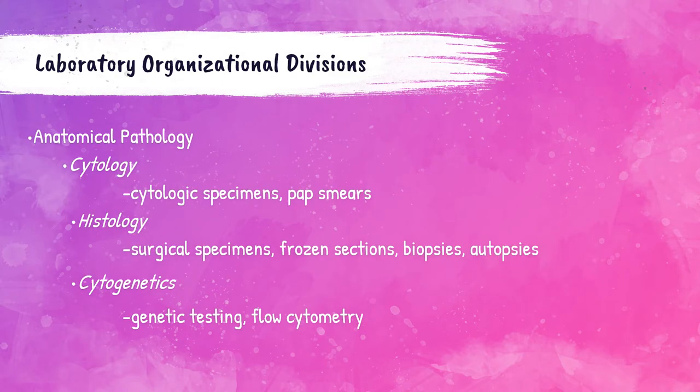There are two main sections of the laboratory. The first section is the anatomical section, which includes cytologists who perform Pap smears and histology technicians who prepare specimens for pathology review by placing thin slices of tissue onto slides and staining them. Cytogenetics may include genetic testing and flow cytometry testing.